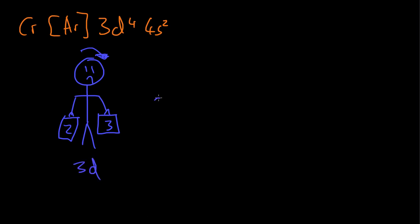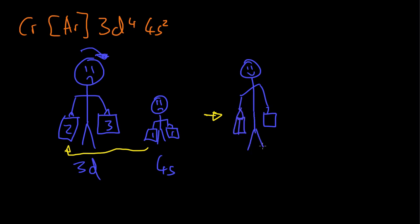And we also have the 4s orbital. He's unhappy because he's carrying two electrons, well, two items. So these are too heavy for him because he's only little, so he's not happy either. So a good way for us to solve this problem is to take one item out of the 4s bag and put it into this 3d bag. And that will mean that we now have happy orbitals.